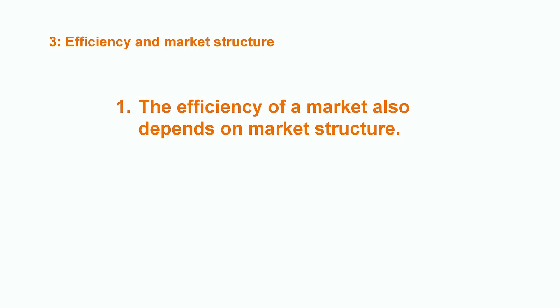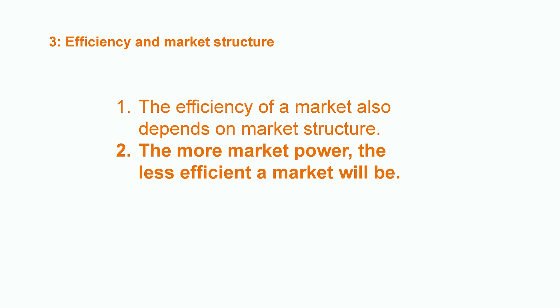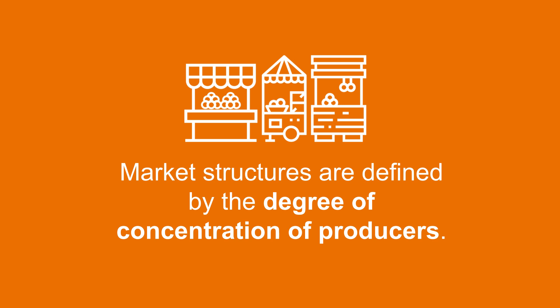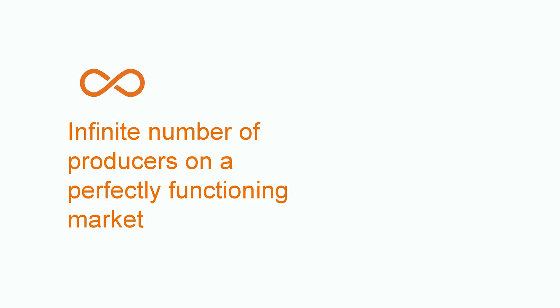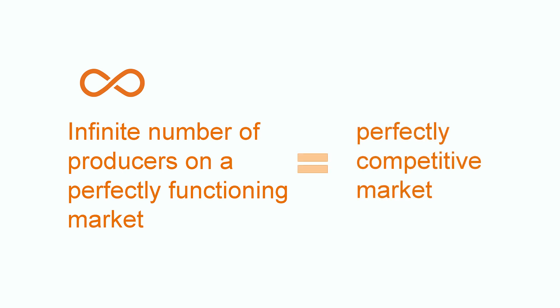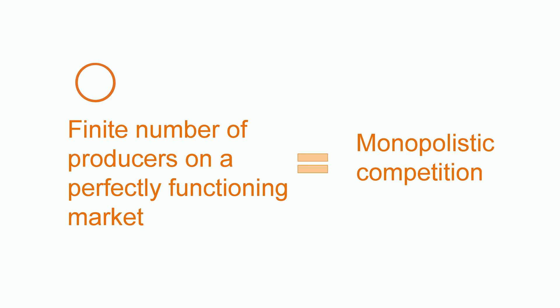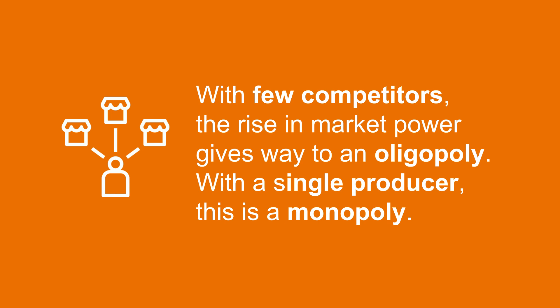The efficiency of a market also depends on a related criterion: the market structure. The more market power there is on a market, the less efficient a market will be. As a consequence, oligopolies and monopolies lead to inefficiencies. There are several types of market structures, defined by the degree of concentration of producers. If there is an infinite amount of producers on a perfectly functioning market, one will talk about a perfectly competitive market. If there is a finite number of competitors, we will talk about monopolistic competition. With fewer competitors, the rise in market power gives way to an oligopoly. With a single producer, this is a monopoly.